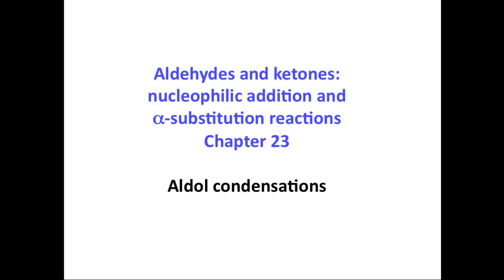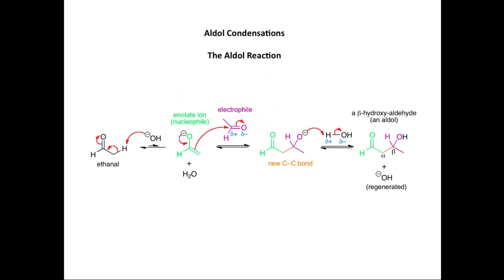Here we're going to discuss aldol condensations, which are covered in the aldehydes and ketones, nucleophilic addition, and alpha substitution reactions chapter. In an aldol condensation there are two distinct steps. The first step is the aldol reaction. We're going to look at an example of how ethanol reacts to form a beta-hydroxyaldehyde — two molecules of ethanol come together in the presence of hydroxide ion to form this beta-hydroxyaldehyde product. Now let's look at the mechanism of this reaction.